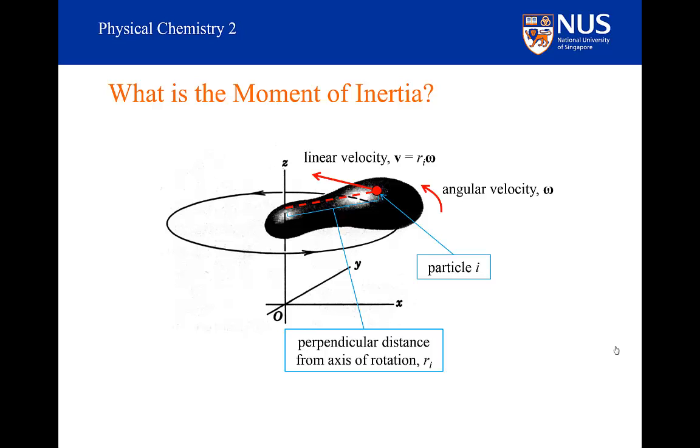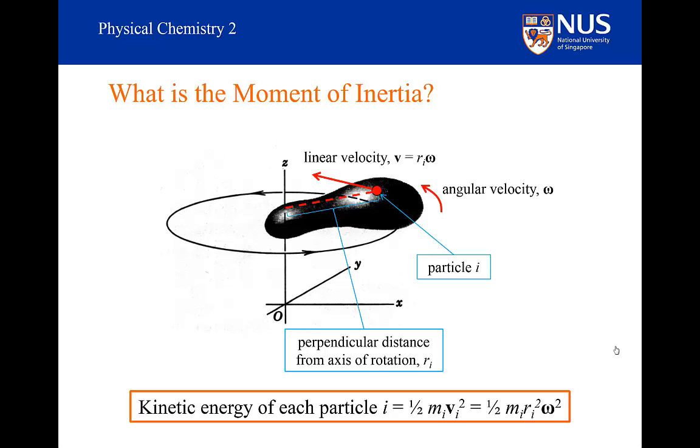So all the particles are moving with the same angular velocity, but they have different instantaneous linear velocities. The linear velocity of a certain particle is the perpendicular distance times the angular velocity. So the particles which are closer to the axis have small instantaneous linear velocities, but the particles which are further away have much faster instantaneous linear velocities. If I know the linear velocity of a particle, I can also say something about the kinetic energy of that particle. So the kinetic energy of the particle is a half mv squared, and I can substitute v for the angular velocity, so that I get a half mr squared omega squared.